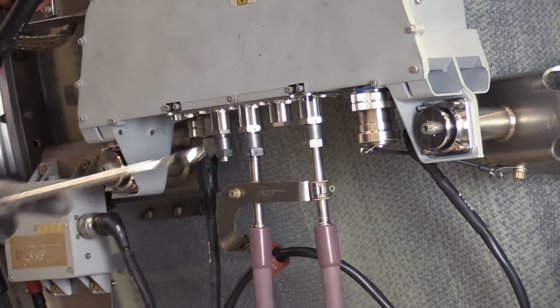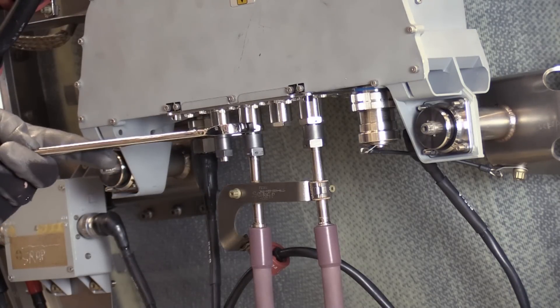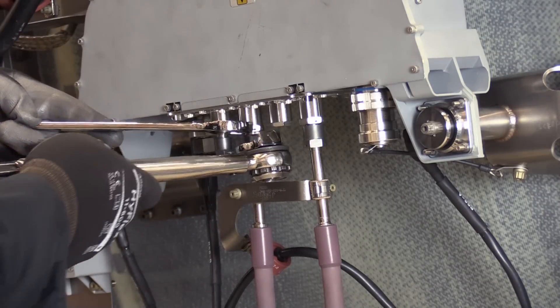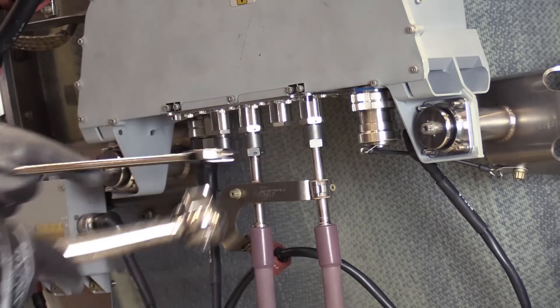Once the lines are reconnected to the pressure subsystem box, we want to go ahead and torque the fittings to the recommended torque value found in the procedure.